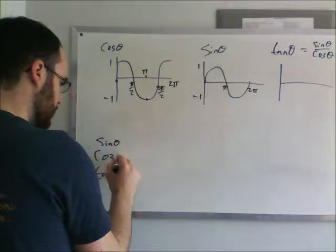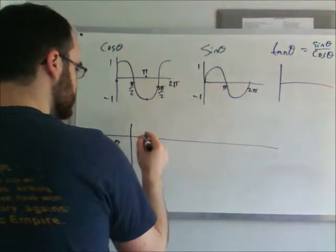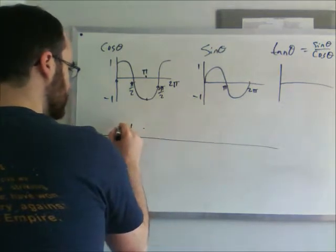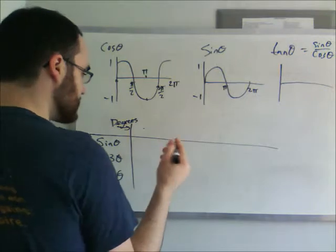These are all theta, of course. But let's say we want to solve for a big table of values here to see what it is. So this will be, this way is our degrees, or radians in this case.